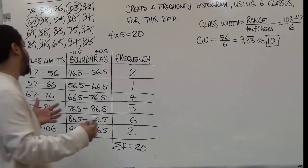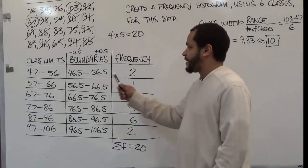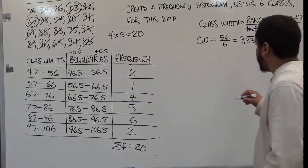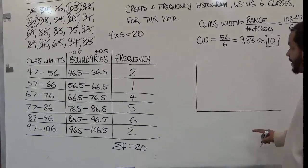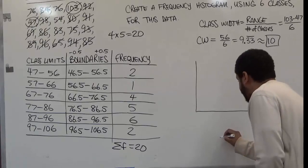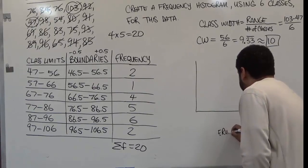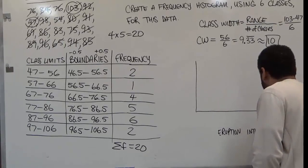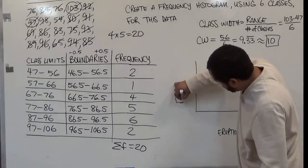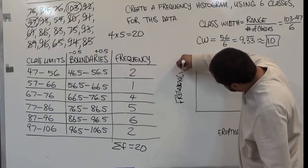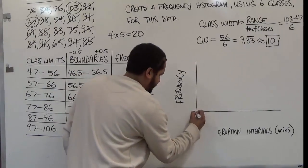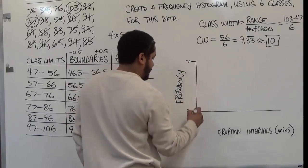Now we want to make the histogram. Remember, we must use the frequency and the class boundaries as the endpoints for the graph, because these values go exactly adjacent to one another. On the frequency histogram, we'll have the boundaries of the eruption times — intervals in minutes between eruptions — along the x-axis, labeled 'eruption times in minutes.'